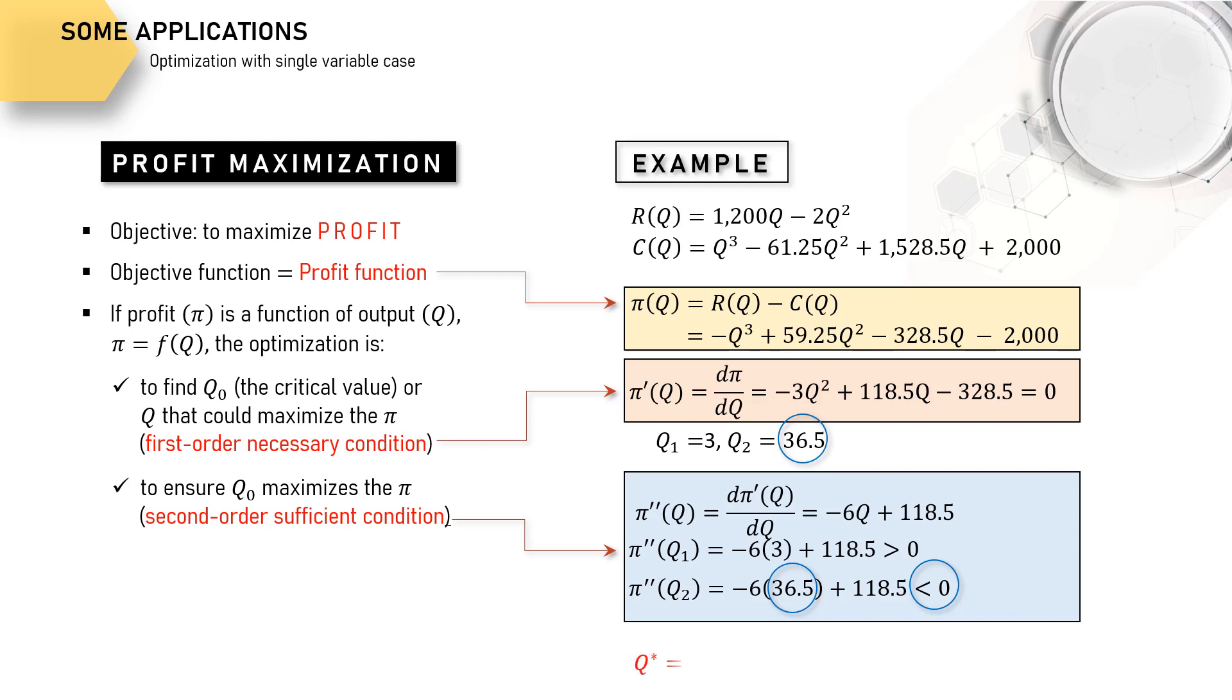Therefore, total output or Q that firm needs to produce is 36.5 units and it will give maximum profit of 1600 something for the firm.